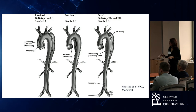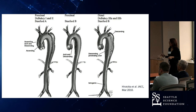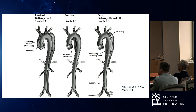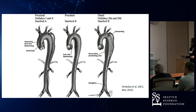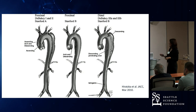And then dissections. There's Stanford A and Stanford B. A involves the ascending thoracic aorta — and it can go descending too, but that's still an A. If the ascending's involved, it's an A. If ascending's not involved and it starts at the arch or descending, that's a B.